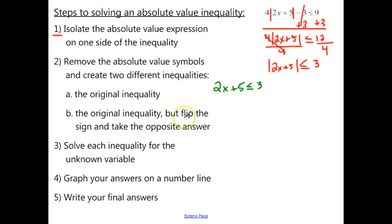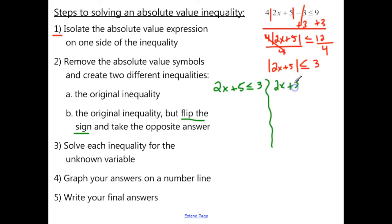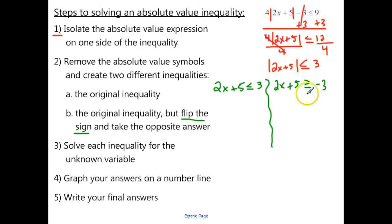Step 2 differs slightly from the equation. We have to write the original inequality and still take the opposite answer, but there's one extra step — we need to make sure we flip the sign also. So we write 2x plus 5, make the answer negative 3, and the less than or equal to becomes greater than or equal to. That's the one extra step with absolute value inequalities versus equations.